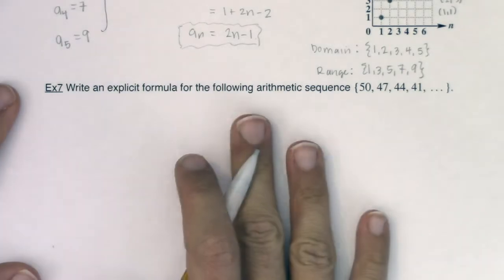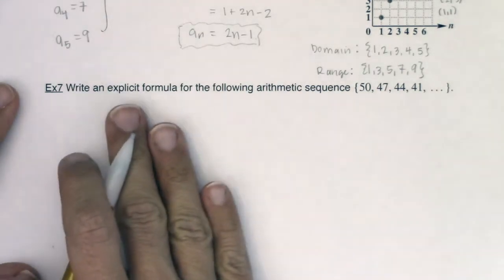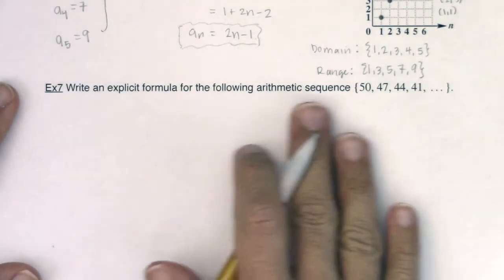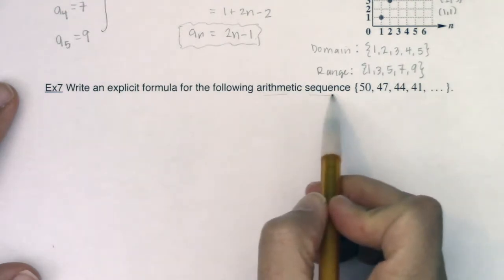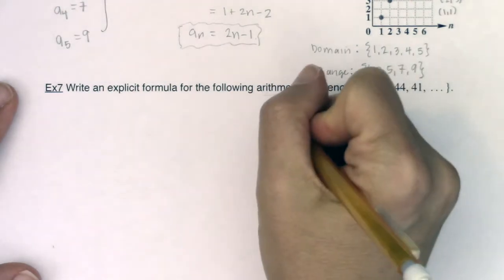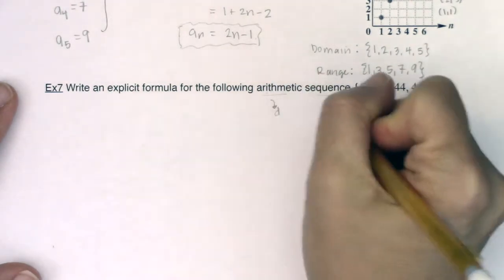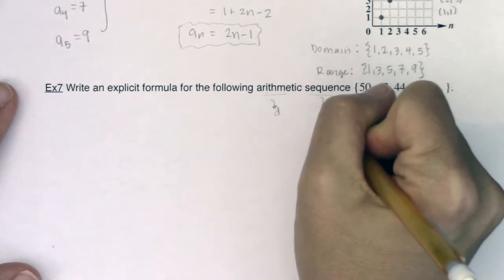Hey, Math 31, welcome to example seven. So we have to write an explicit formula for the following arithmetic sequence. Okay, arithmetic, again, I'm going to have a D involved, sequence. I've got a list of numbers.